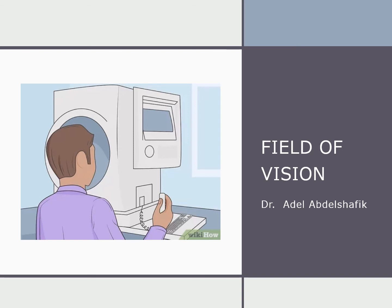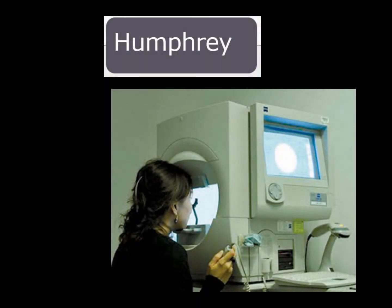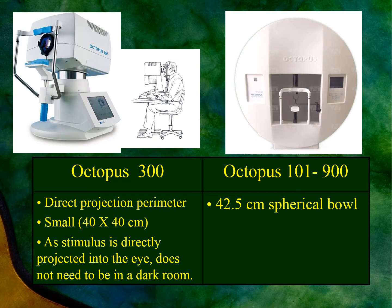This is an updated version of the lecture on field of vision. My talk will be comparing the Humphrey versus the Octopus. The Octopus 101 and Octopus 900 are similar to the Humphrey machine. On the other hand, the Octopus 300 is a direct projection perimeter — it is small in size, the stimulus is directly projected into the eye, and it does not need to be in a dark room.